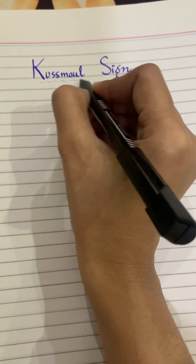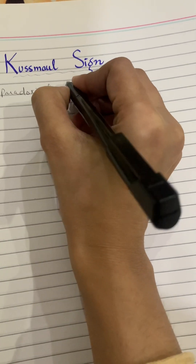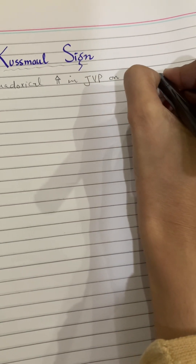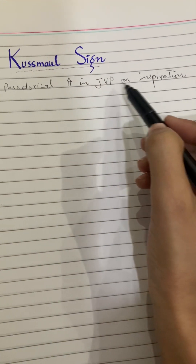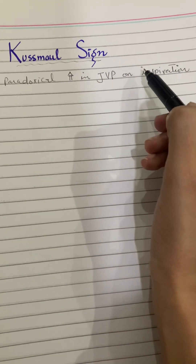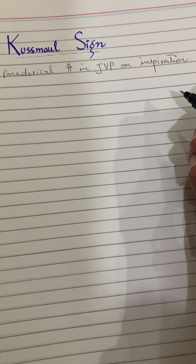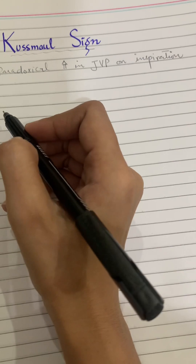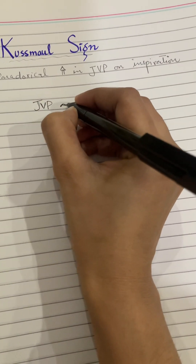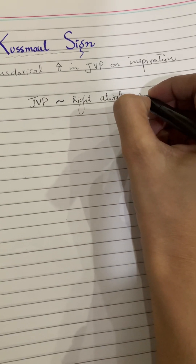In this video we are going to learn the small sign. The small sign is paradoxical increase in JVP on inspiration. Normally JVP decreases on inspiration, so this is the abnormal condition in which on inspiration JVP increases. To understand the abnormal, first we will learn the physiology of the normal and then the pathology. JVP, that is jugular venous pressure, is almost indicative of right atrial pressure — it indicates the pressure in the right atrium.